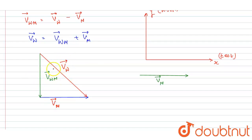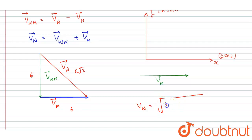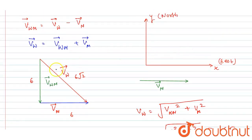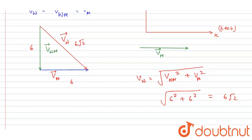You can get its magnitude. This component is six and this component is also six. If you calculate it from Pythagoras, the magnitude of Vw equals the square root of six squared plus six squared, which is six root two. Looking at the direction, the wind is blowing towards the south-east.